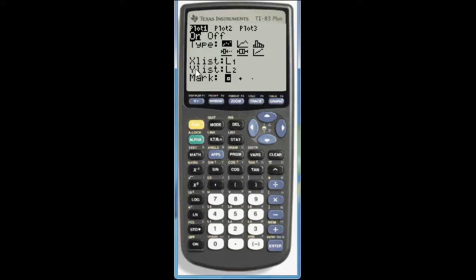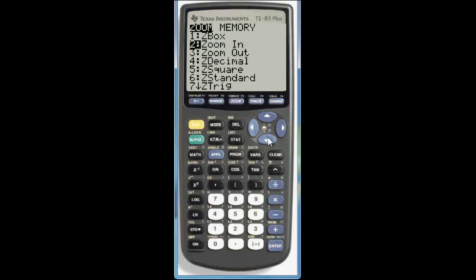We want to make sure the x list is list one. The y list is list two. And then we can go ahead and leave the mark as it is. Now to make sure that our data values are all graphed on our graph we need to change the parameters of the window. But because we're using a scatter plot we can have the calculator give us a good approximation of what that window should be by going to zoom. And if you scroll down to option nine it's zoom stat. So it will zoom to any statistics plots. Which in this case is the scatter plot we put in stat plot. So choose option nine hit enter.